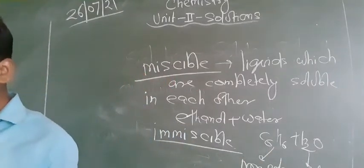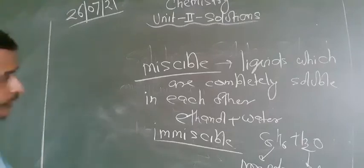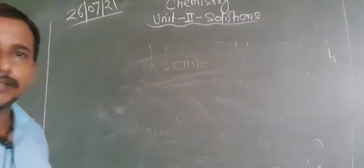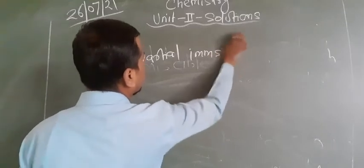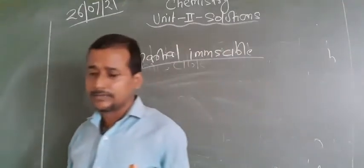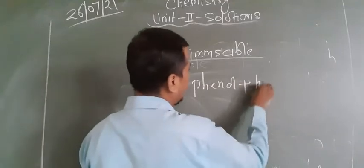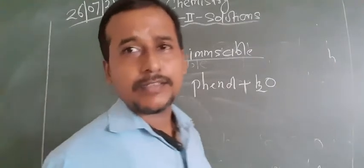The next concept is partially miscible, where the intermolecular attraction of one liquid is different from the other. The common example of partially miscible liquids is phenol and water. In our homes also, we make a solution of phenol for use as a disinfectant.